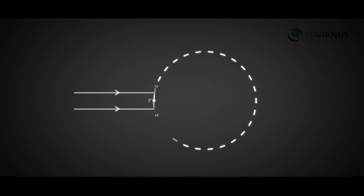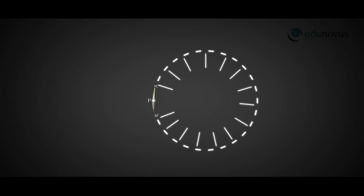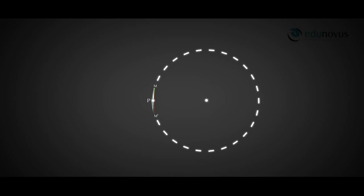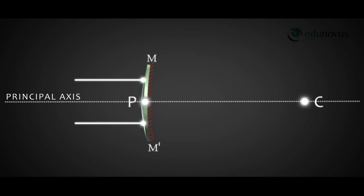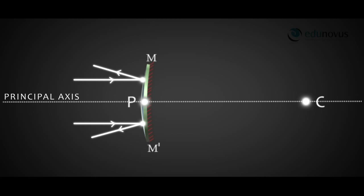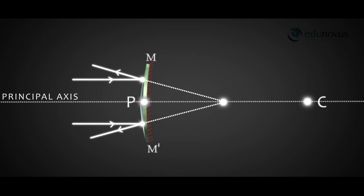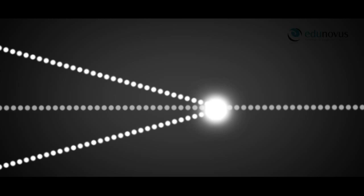The convex mirror is part of a spherical shell. The centre of that spherical shell is called the centre of curvature, denoted by C. When you join the centre of curvature C and the pole P, the straight line is called the principal axis. If incident rays on the mirror are parallel to the principal axis, after reflection they diverge outwards but appear to come from a point behind the mirror. Extending the reflected rays backward, they meet at a point on the principal axis called the principal focus, denoted by F.